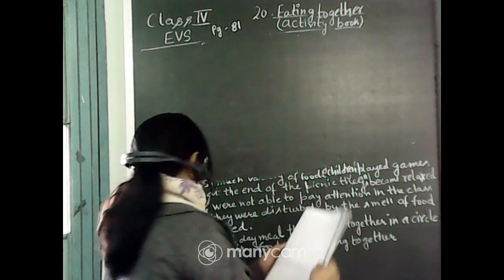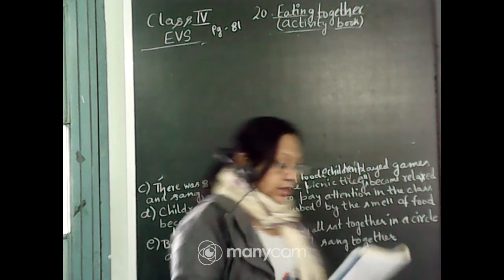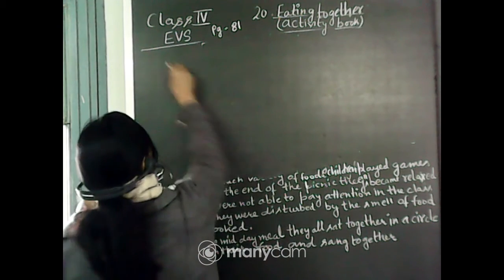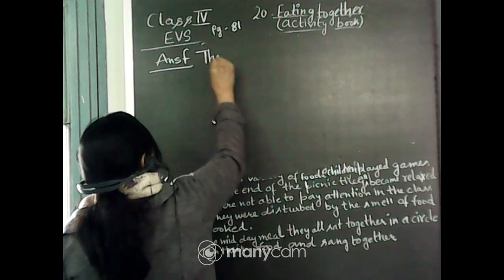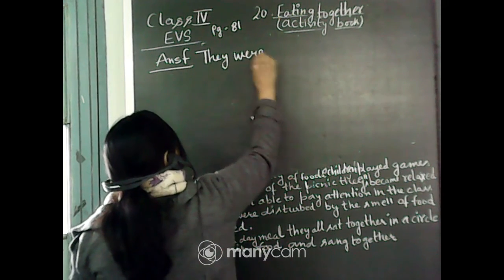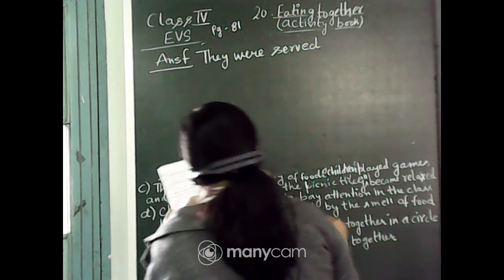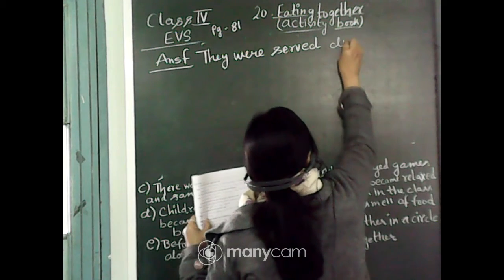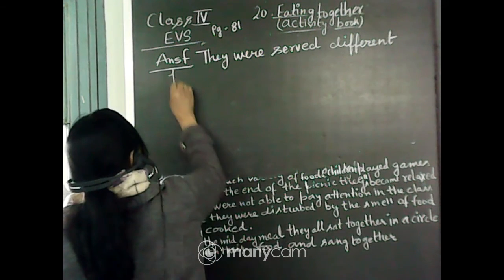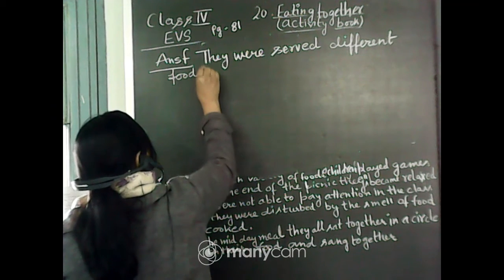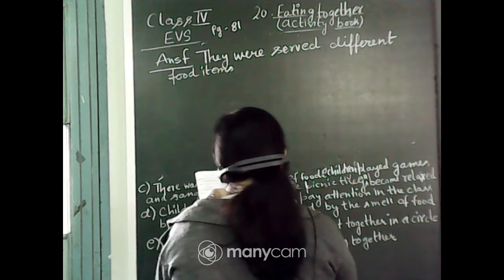Next question F: what were they served in the midday meal? The answer is — they were served different food items in different days of the week.